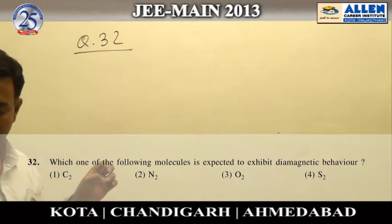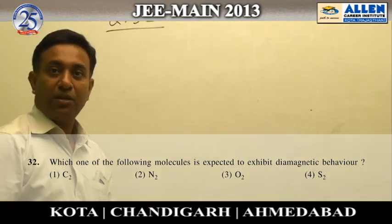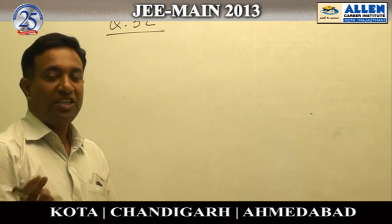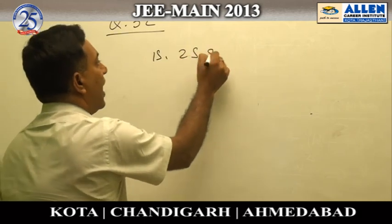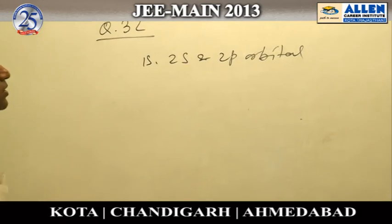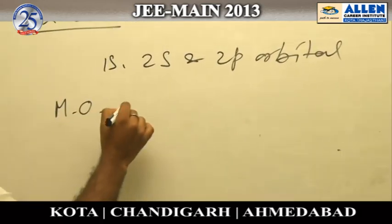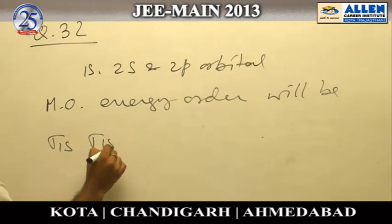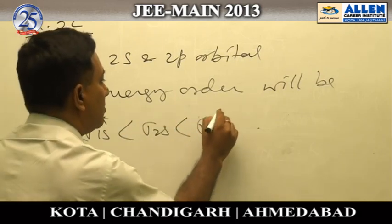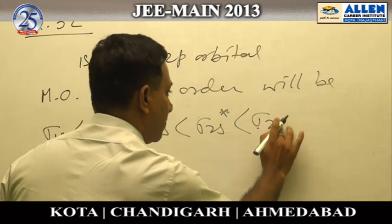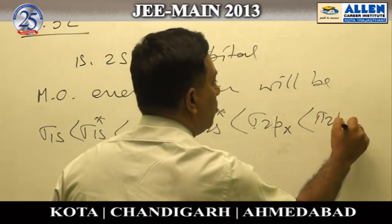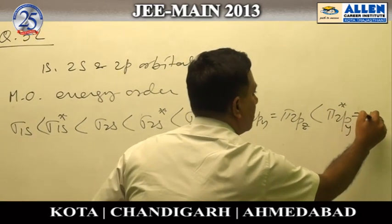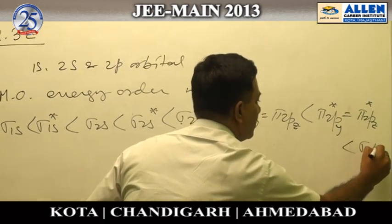Question number 32: the expected magnetic behavior has been asked. According to the constructive and destructive interference of the 1s, 2s, and 2p orbitals of any two atoms, the energy order will be: Sigma 1s, Sigma 1s*, Sigma 2s, Sigma 2s*, Sigma 2px, Pi 2py, Pi 2pz, Pi 2py*, Pi 2pz*, Sigma 2px*.